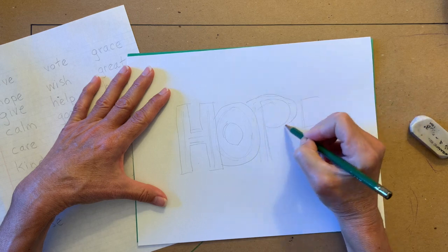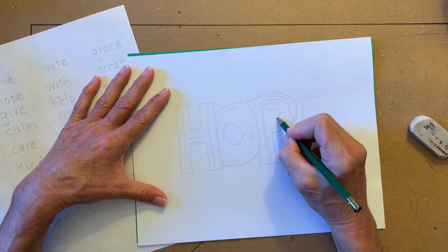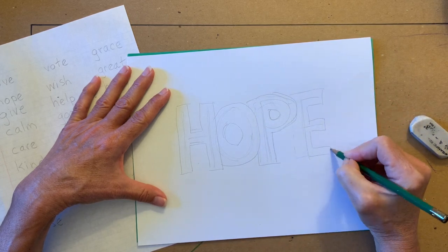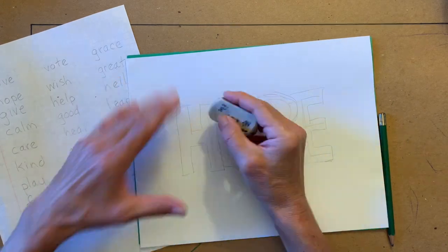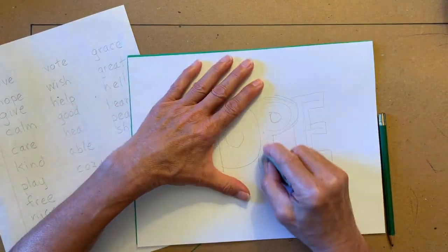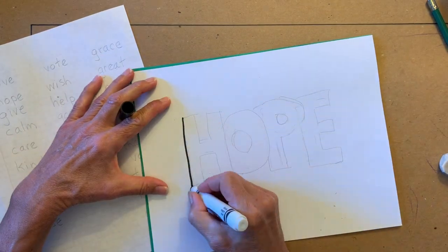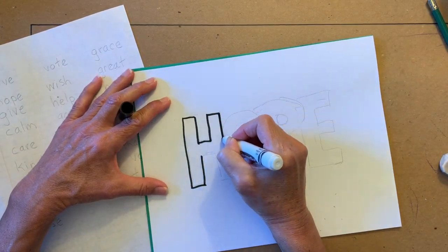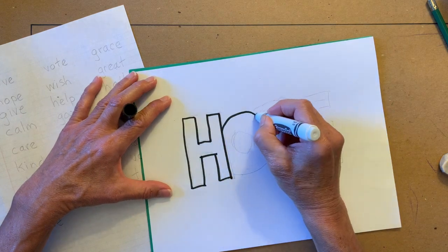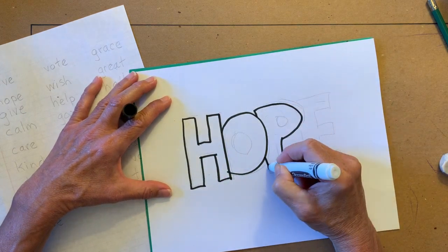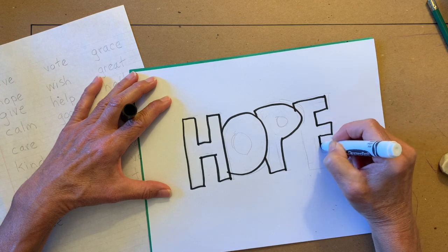Draw lines around your word to create block letters that overlap. Then erase the inside lines. Use a black marker to outline your letters. Then add shadow lines to each letter.